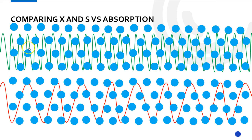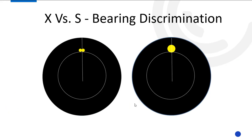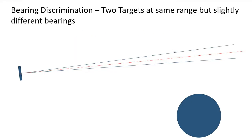Just to recap: the X band hit every molecule it encountered, while the S band only hit about half of them. Now we're going to move on to discrimination. There are two types. Discrimination is defined as the ability of the radar to distinguish between two different targets. Bearing discrimination involves two targets at the same range but slightly different bearings — does it appear as two targets or one? The IMO says beam width should be no more than two degrees, so as to differentiate between targets that are two and a half degrees apart.